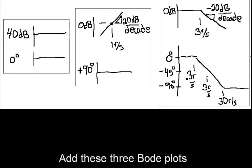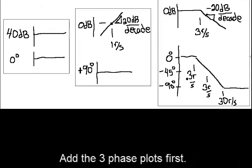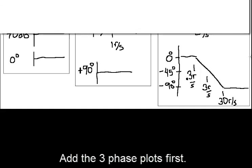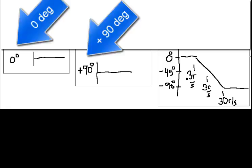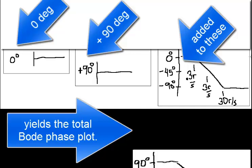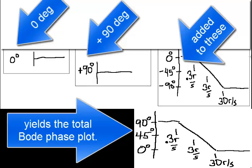Add these three Bode plots. 0 plus 90 added to these yields the total Bode phase plot.